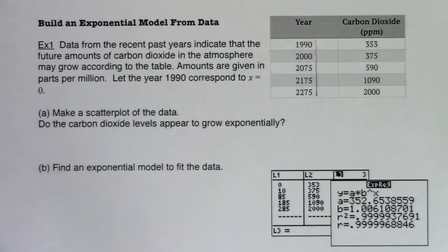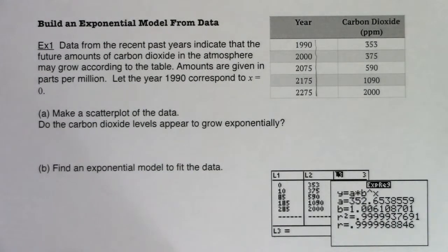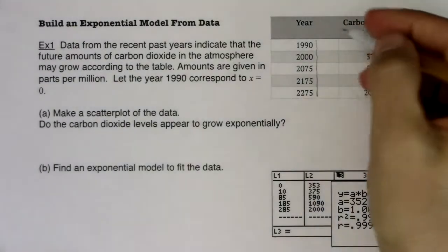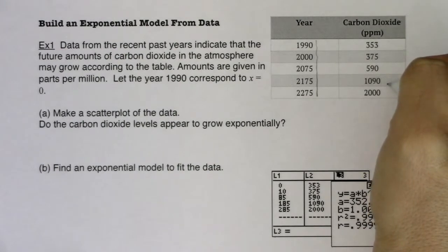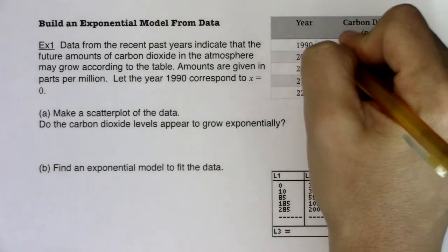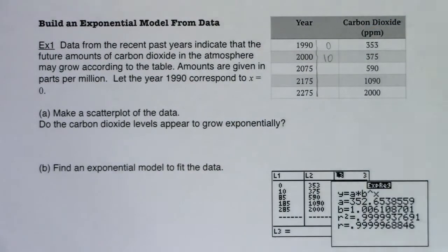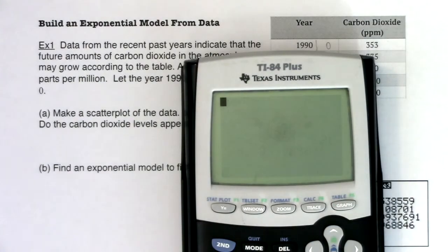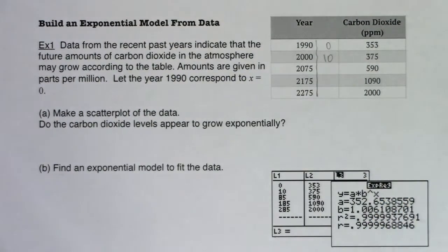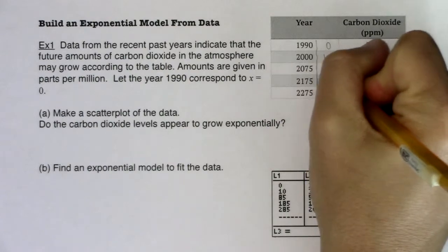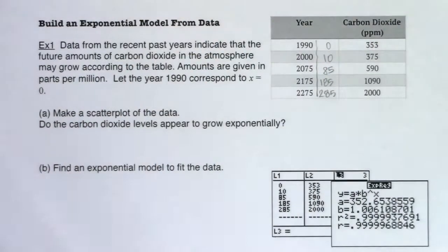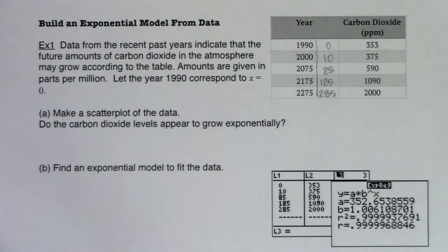Data from recent past years indicate that the future amounts of carbon dioxide in the atmosphere may grow according to the table. Amounts are given in parts per million. Let the year 1990 correspond to x equals zero. Make a scatter plot, and do the carbon dioxide levels appear to grow exponentially?